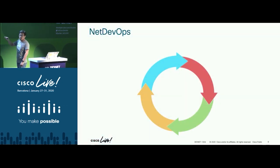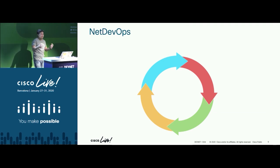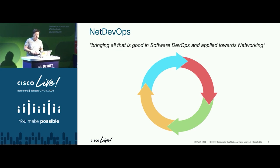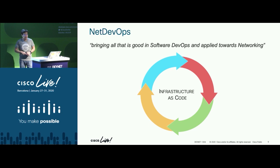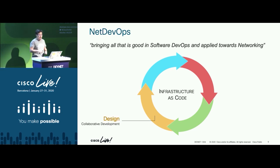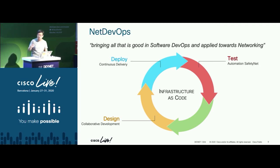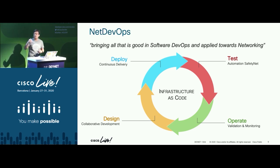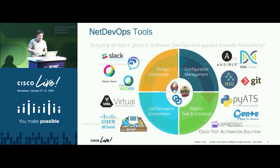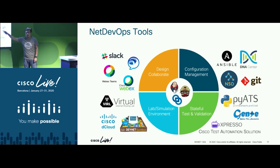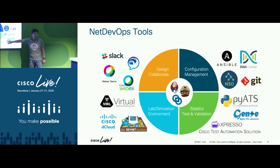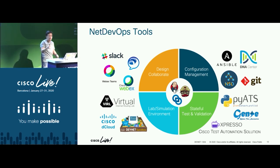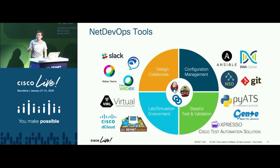You've probably heard a lot about NetDevOps. NetDevOps is about bringing all that's good in software DevOps and applying it towards networking. That means you start with networking infrastructure as code, then you design, deploy, test, and operate rapidly. Looking at all the different tools that enable NetDevOps, people seem to not focus enough in the testing area. You can iteratively make changes but your network may still go down. You still need to verify at the end of the day whether things are doing well. That's where PyATS comes in.